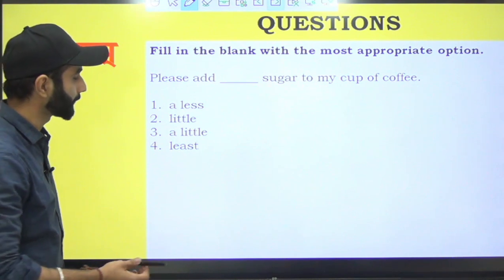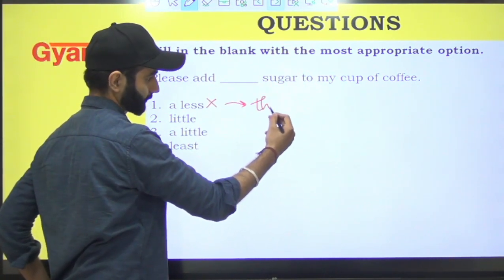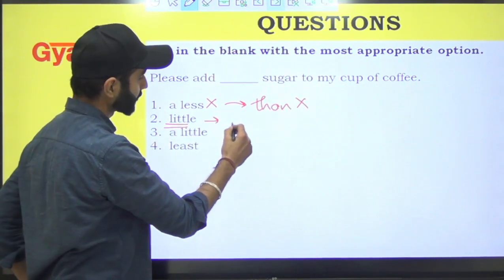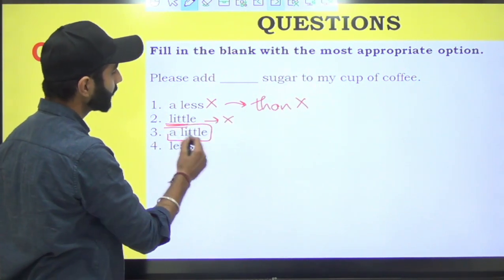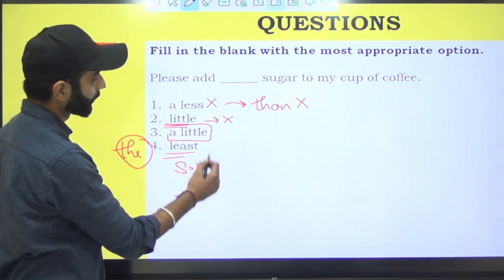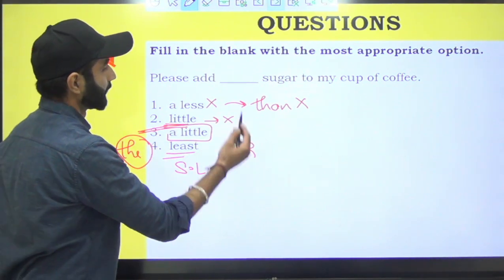Please add dash sugar to my cup of coffee. 'Less' lagayenge toh aage 'than' chahiye jo hai nahi. 'Little' matlab na ke barabar, yeh possible nahi. It should be 'a little'. 'Least' ke saath article chahiye because it acts as superlative degree. So answer aayega three.